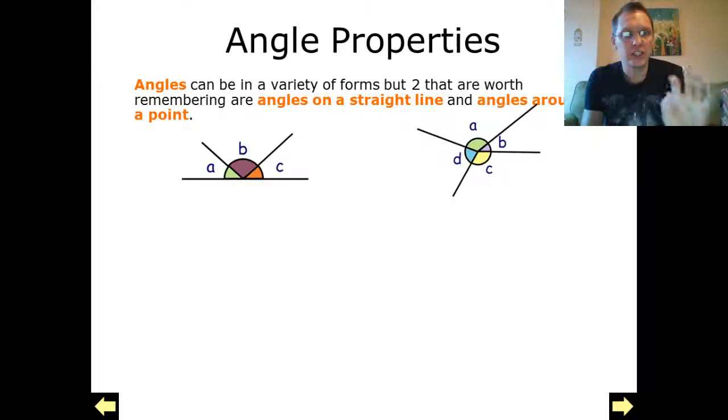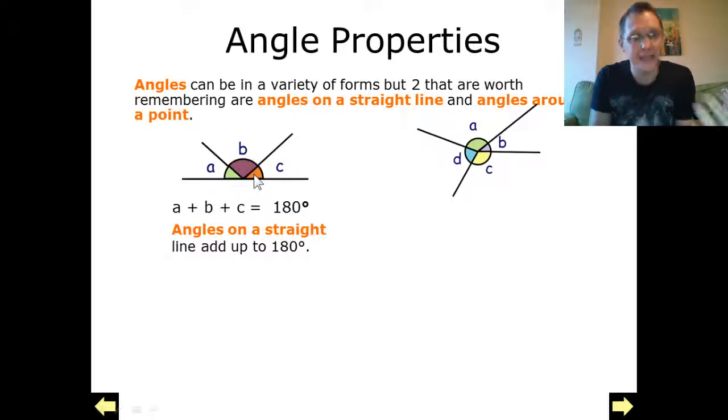So we've got these two forms of different angles which are worth actually making a little note of. So here we've got angles A, B, C on a straight line. All angles on a straight line add up to 180 degrees.